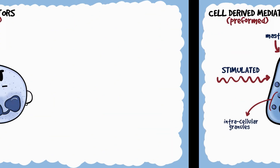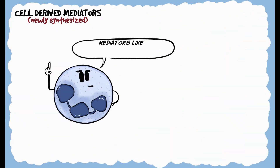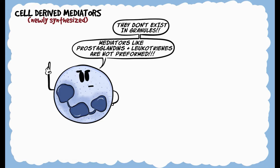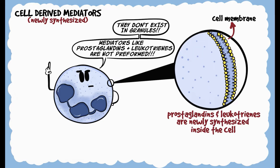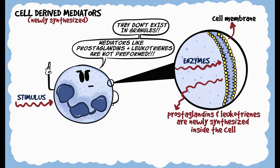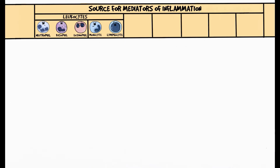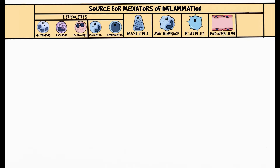On the other hand, there are certain chemical mediators like prostaglandins or leukotrienes that are not preformed. They don't exist in granules. They are rather newly synthesized in the cell with the help of certain enzymes when needed. Leukocytes, mast cells, macrophages, platelets and even endothelial cells could synthesize mediators of inflammation.